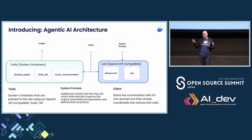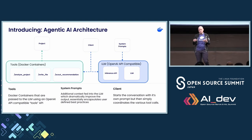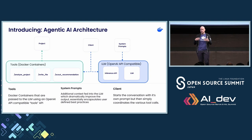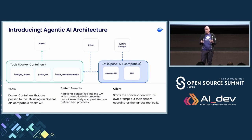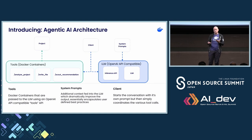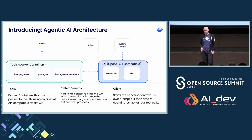On the other side, we have system prompts — a set of instructions, text files that we feed the large language model to give it additional knowledge and additional context. This dramatically improves the output of the large language model. And at the end, we have a client. The user starts a conversation with their own prompts, and then the client coordinates the large language model responses and the tool requests. This all works together, and you can start with an empty project, ask for a Docker file, and it will use the best recommendations to generate a perfect Docker file for your project.